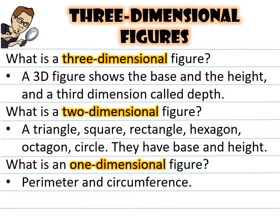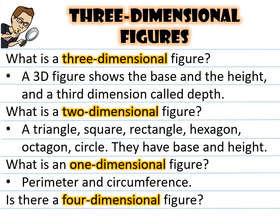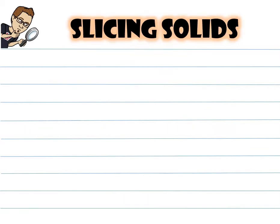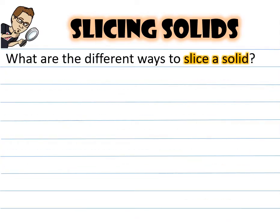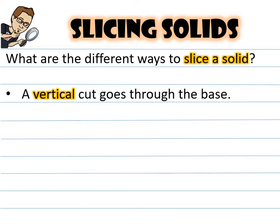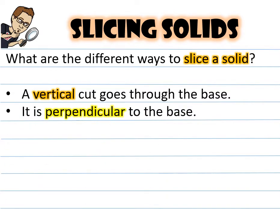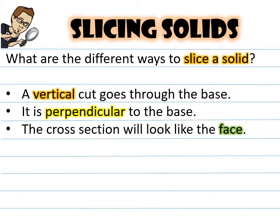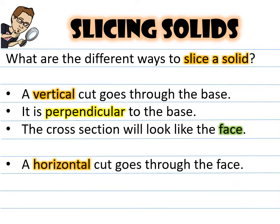What is a one-dimensional figure? Something like perimeter or circumference — finding the distance of one side. Is there such a thing as a four-dimensional figure? Nope. What are the different ways to slice a solid? A vertical cut goes through the base; it is perpendicular to the base, and the cross sections will look like the face.